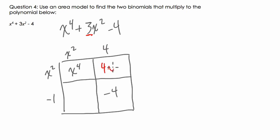4 times x squared is 4x squared. x squared times negative 1 is negative x squared. And if you see what's happening, this is the area of our trinomial. Let's add the pieces together. We have x to the 4th. Add these two. That's positive 3x squared minus 4.